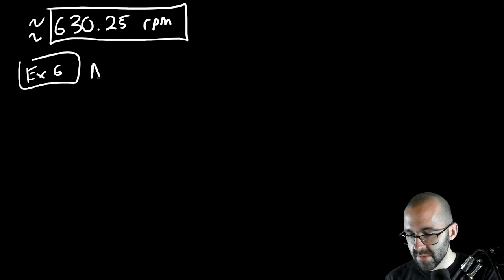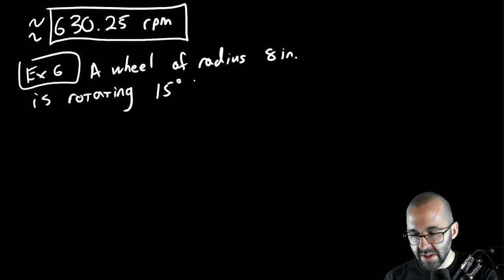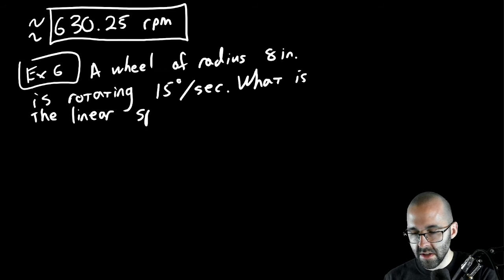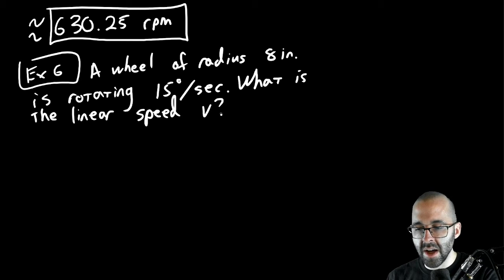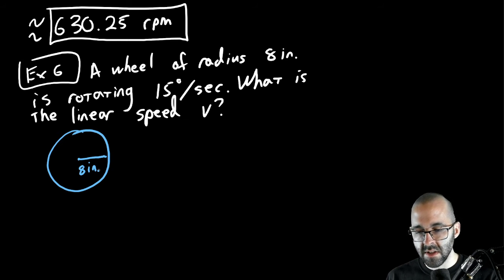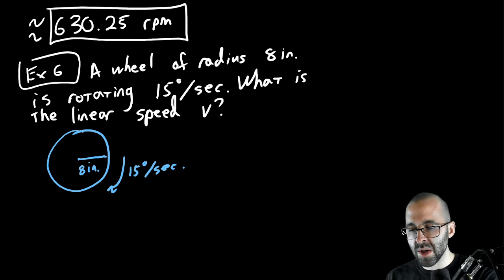Example 6: A wheel of radius 8 inches is rotating at 15 degrees per second. The question is: what is the linear speed? We're going the opposite direction here. Drawing the wheel with radius 8 inches, rotating at 15 degrees every second — that's where we start.